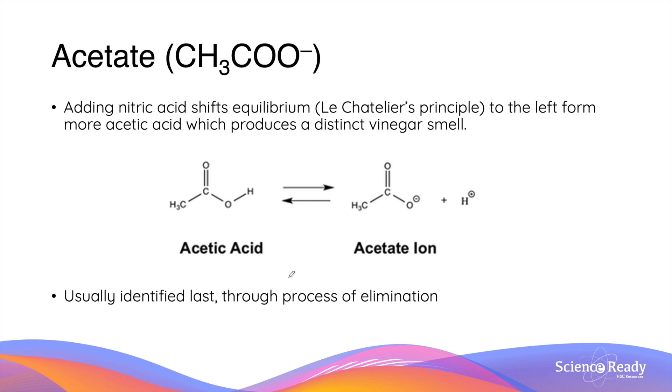A more specific test to confirm the presence of acetate ion is by adding nitric acid. As we saw earlier, acetate ion is in equilibrium with acetic acid. By adding nitric acid, we are increasing the concentration of proton in this equilibrium. According to Le Châtelier's principle, this will shift the equilibrium towards the side of acetic acid. In other words, by adding more nitric acid, we are increasing the concentration of acetic acid. Acetic acid is responsible for the vinegar smell that we often identify. So by producing more acetic acid, we will produce a strong vinegar odor.